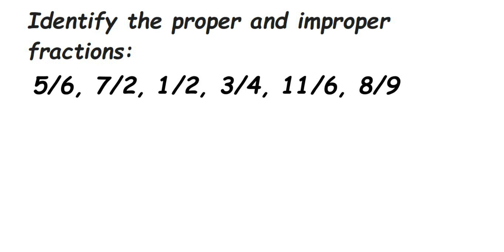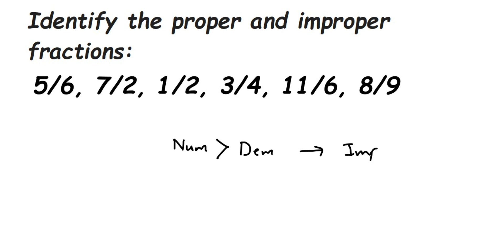Here's a question from fractions: identify proper and improper fractions. We have given a few fractions and we have to identify which one is proper and which one is improper. It's very simple — you just have to check the numerator. Whenever the numerator is greater than the denominator, it is called an improper fraction. If the numerator is less than the denominator, it is called a proper fraction.